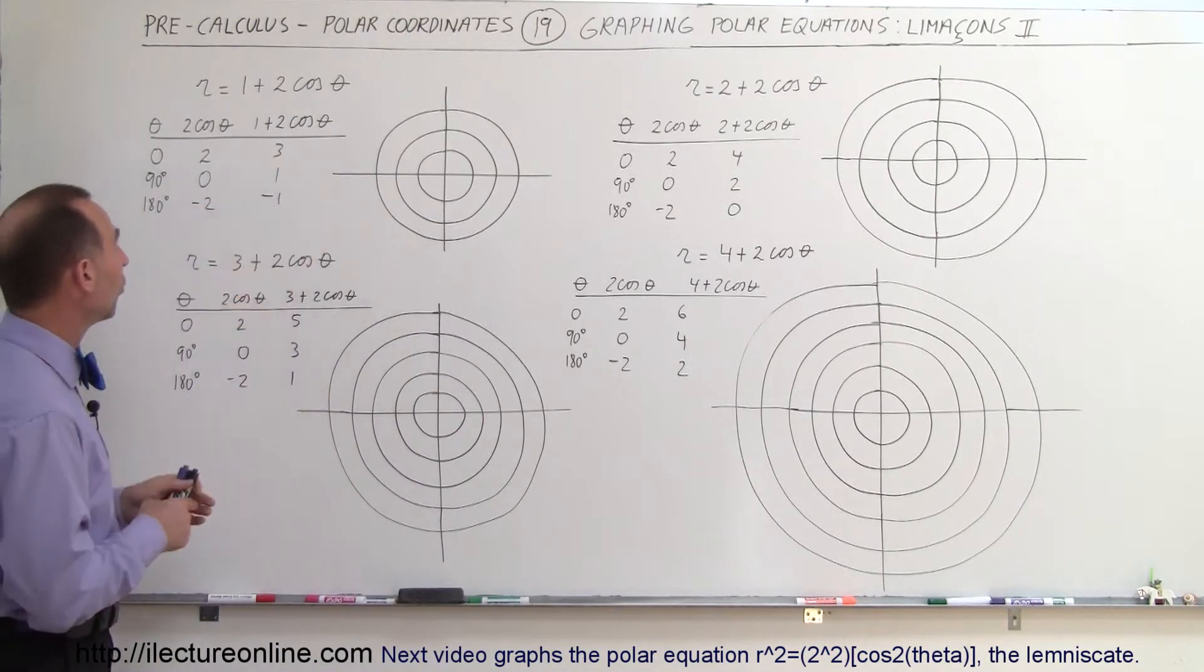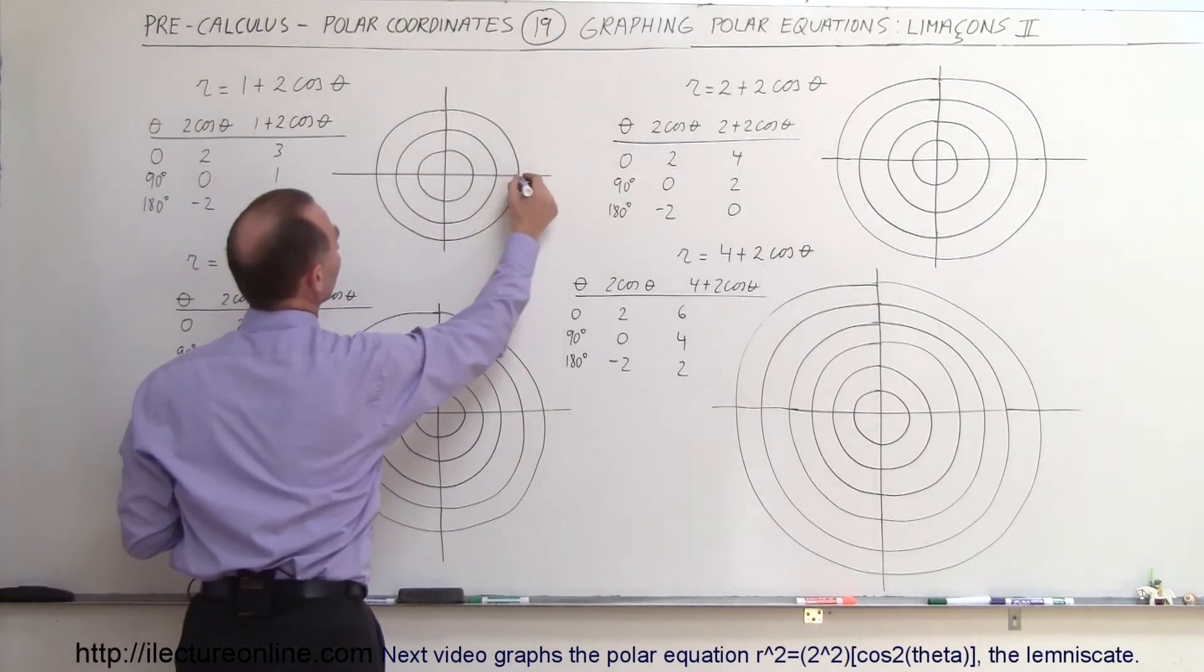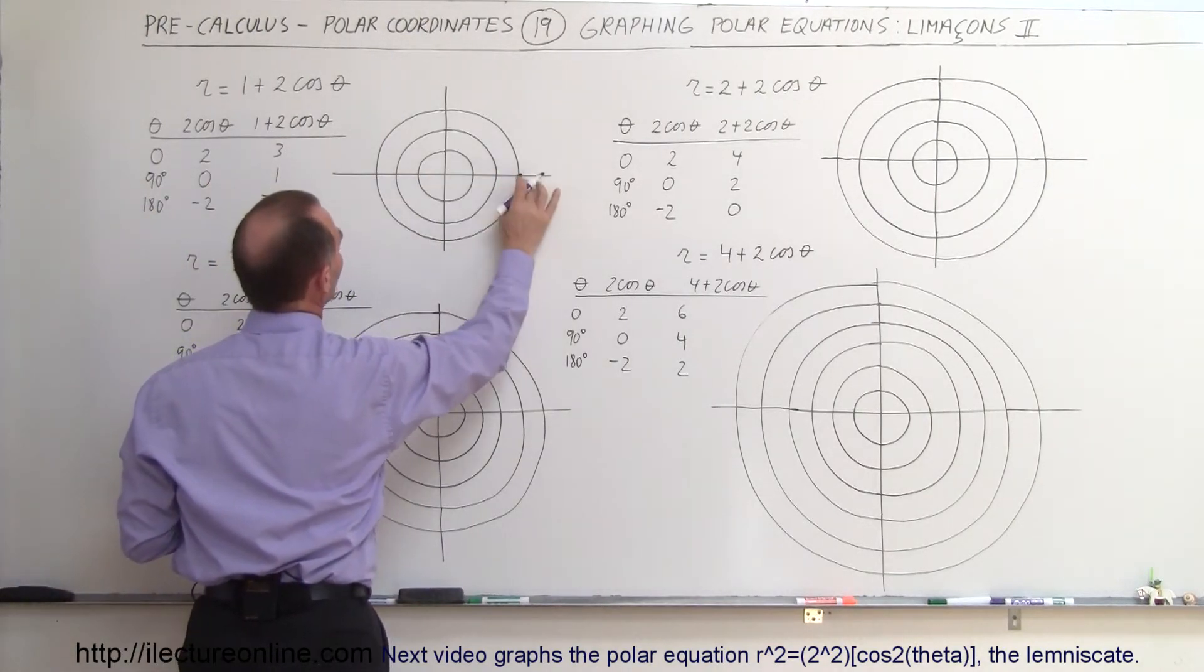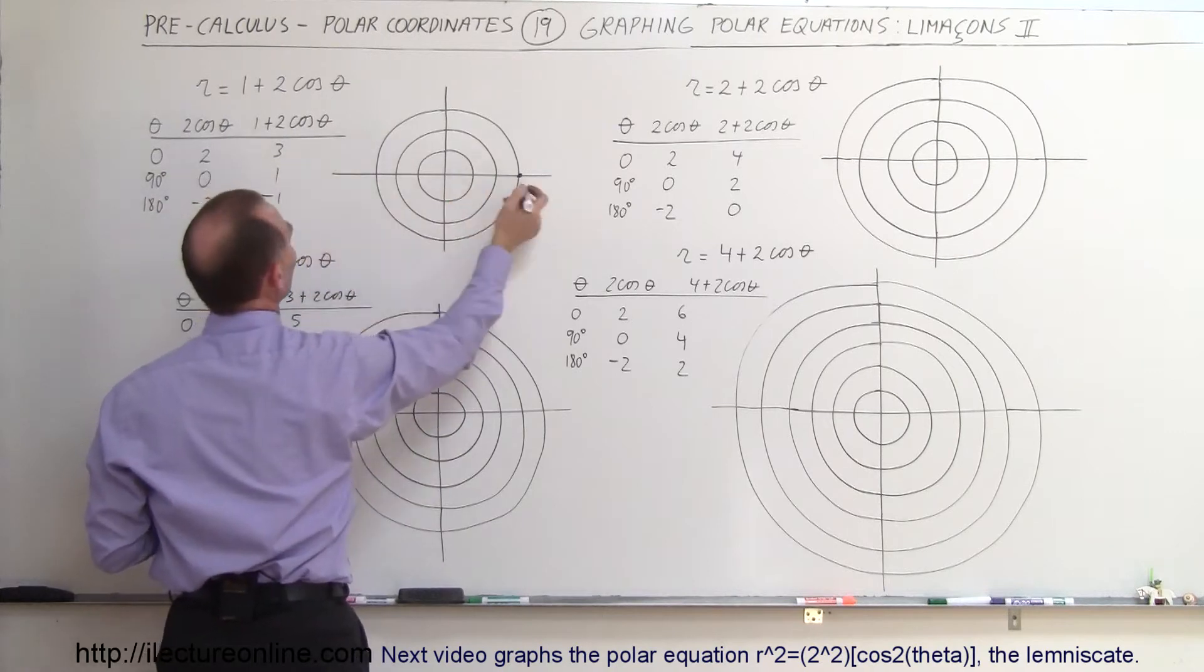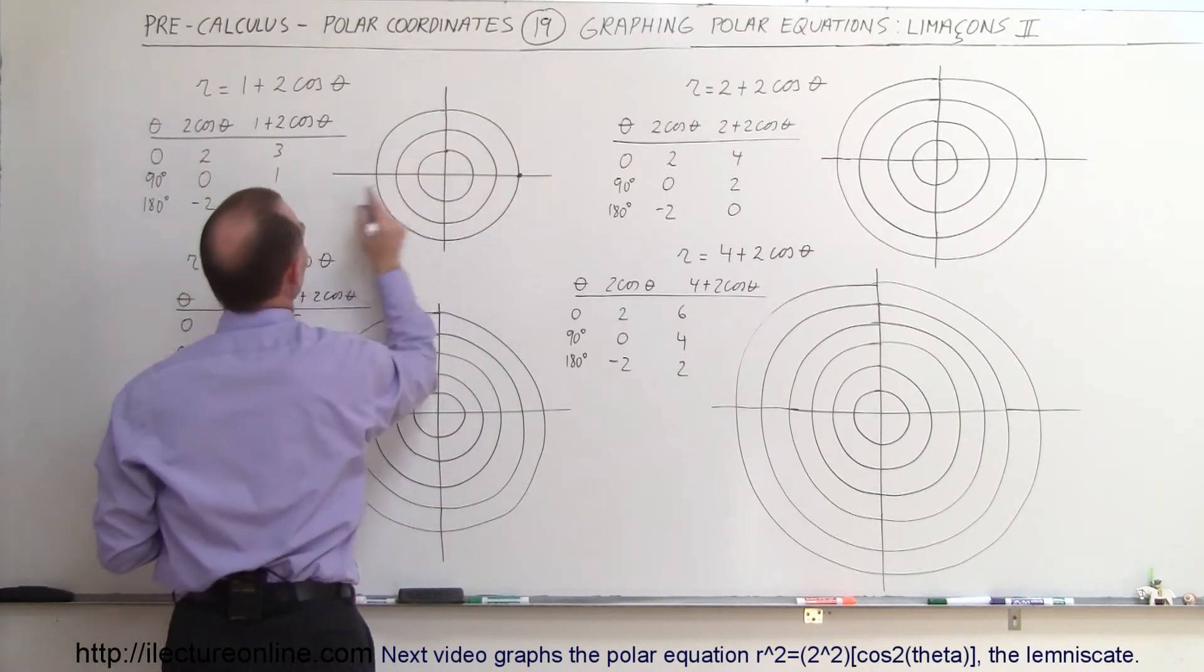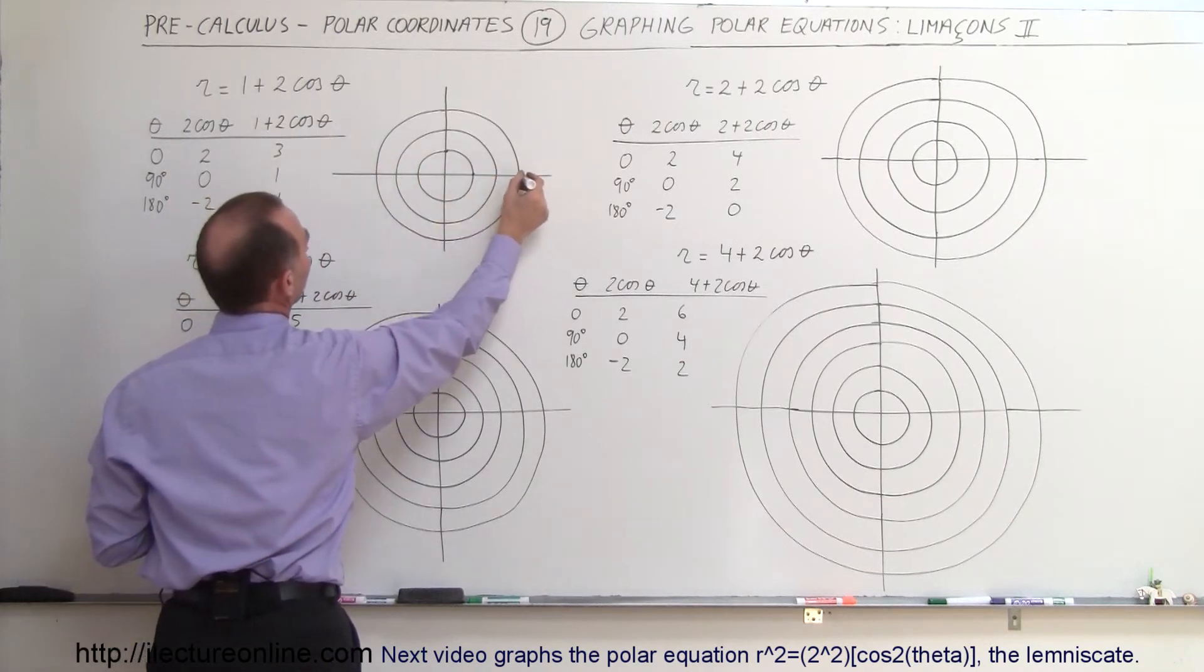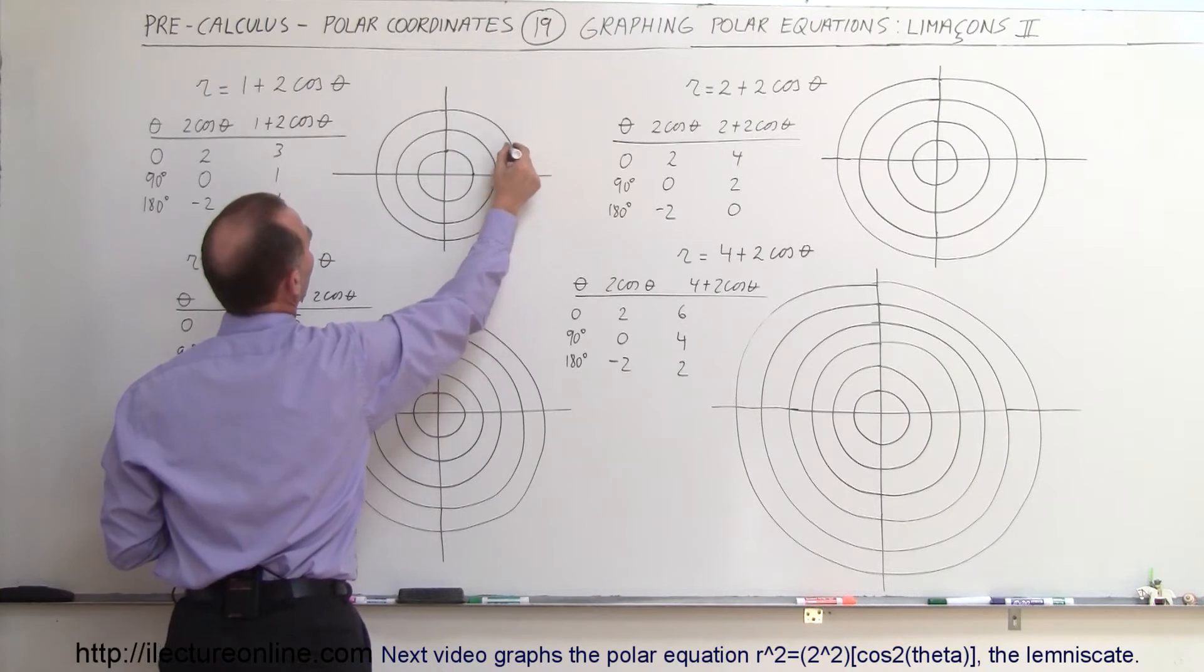So here we have seen this one before. Notice that when the angle is 0 degrees, we're at a radius of 3. At 90 degrees it's equal to 1, and at 180 degrees it's equal to negative 1, so pointing in this direction we actually have a negative 1 value, so that the limaçon will look like this.